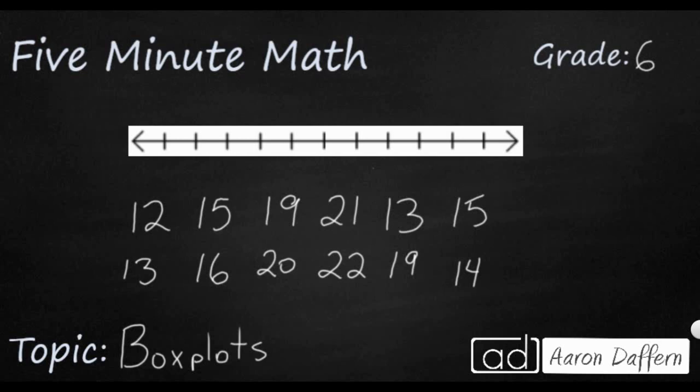So a box plot, sometimes you might have heard it called a box and whisker plot, is a strange but very useful way to represent large sets of data. If you look at all these numbers we have on the screen, we have 12 different data sets here, two rows of six, and we are going to create a box and whisker plot or a box plot.